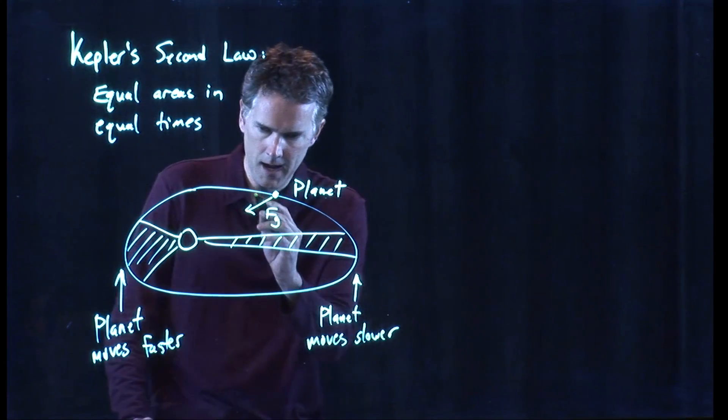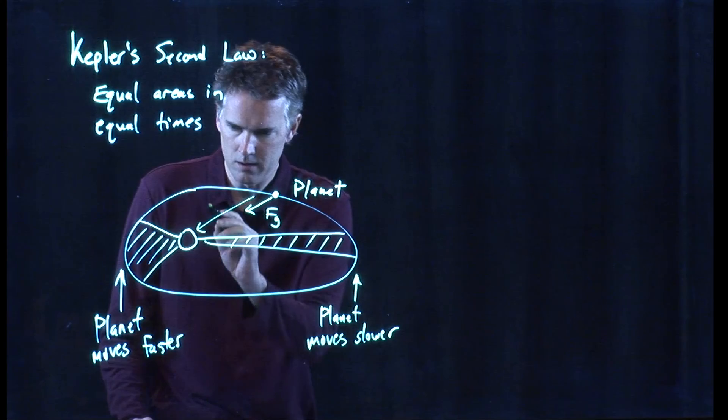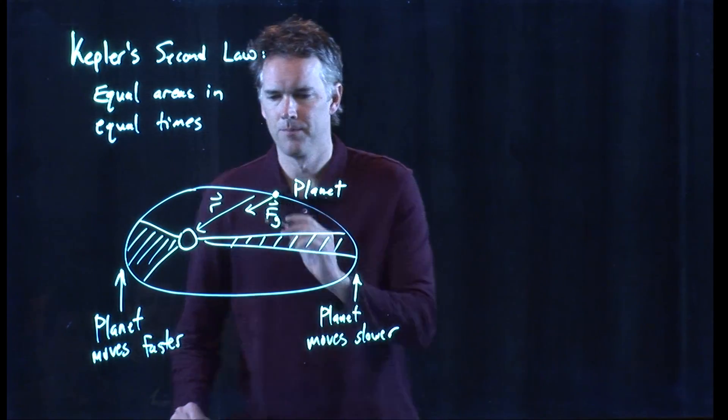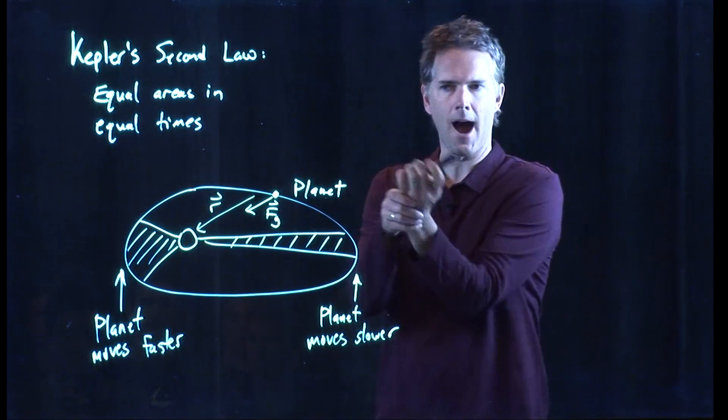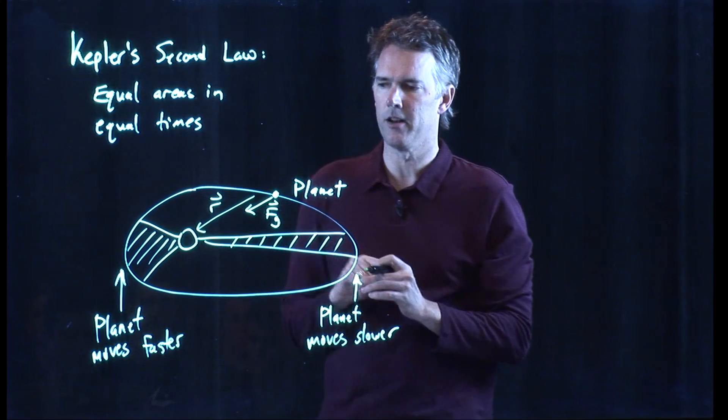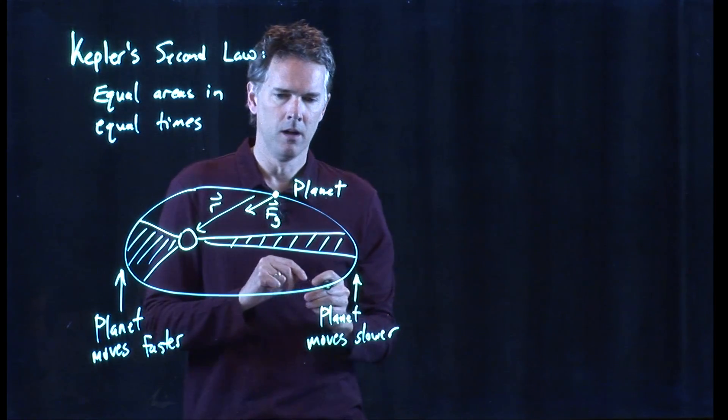All right. But there is also a line here, which we can call R, which is the position vector of the planet. It doesn't really matter if you draw it out from the Sun or towards the Sun. It's not going to matter, as you'll see in a second.